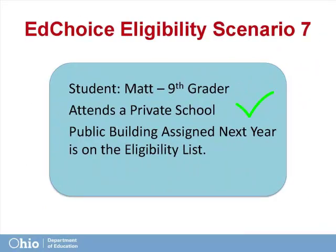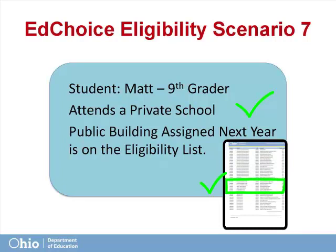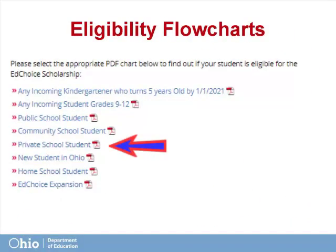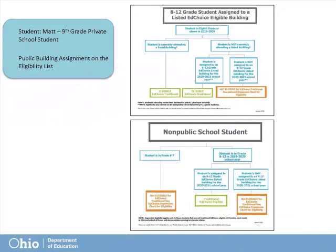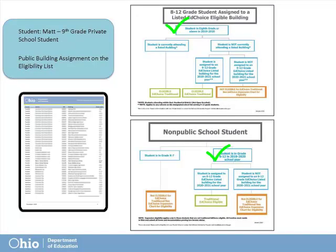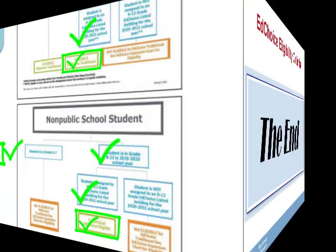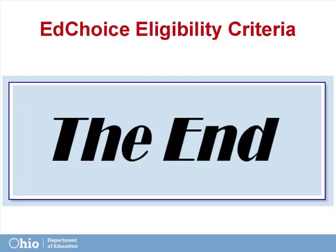Our next student is Matt, a 9th grade student residing in McKinley Local School District who currently attends a private school. The school building that Matt would be assigned to attend for 10th grade is on the eligible school list. Using either the non-public school chart or the incoming student grades 9-12 flowchart, we verify that Matt is an 8th through 12th grade student who would be assigned to an EdChoice listed building for next year. Therefore, on either chart, he is traditional EdChoice eligible. This ends the EdChoice Scholarship Eligibility Criteria Tutorial.